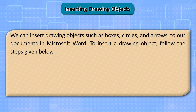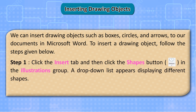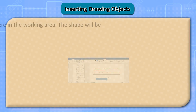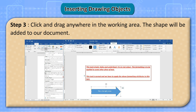To insert a drawing object, follow the steps given below. Step 1: Click the Insert tab and then click the Shapes button in the Illustrations group. A drop-down list appears displaying different shapes. Step 2: Select the shape we want to insert in our document. Step 3: Click and drag anywhere in the working area. The shape will be added to our document.